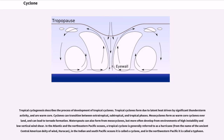In the Atlantic and the northeastern Pacific Oceans, a tropical cyclone is generally referred to as a hurricane, from the name of the ancient Central American deity of wind, Huracán. In the Indian and South Pacific Oceans it is called a cyclone, and in the northwestern Pacific it is called a typhoon.